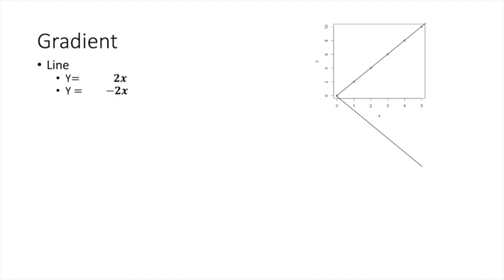Next, consider a downward slope. Pause and verify that as x increases, y decreases. This means that y changes negatively with a change in x, so the slope, or the gradient, is negative. Consider now y equals 2 plus 2x. This simply adds a constant 2 to our previous function y equals 2x. Therefore, this function, as you can see from the plot, is elevated above y equals 2x. But the gradient or its slope is the same as y equals 2x, because the two lines are parallel to each other — so simply adding a constant value 2 did not change the slope or the gradient.